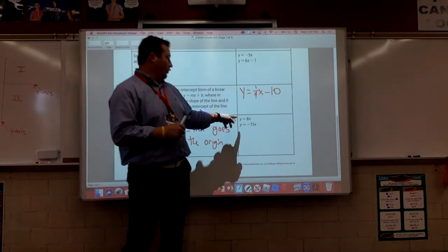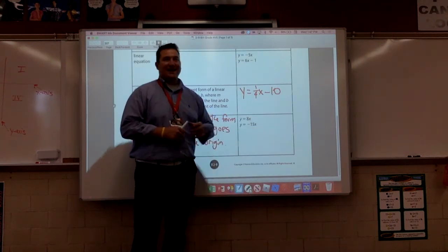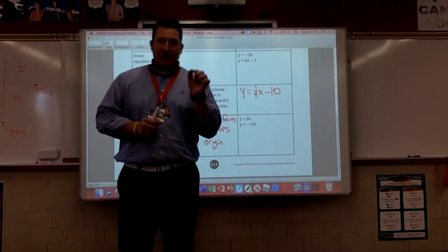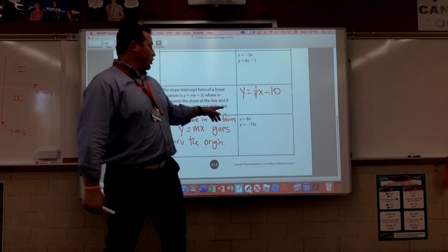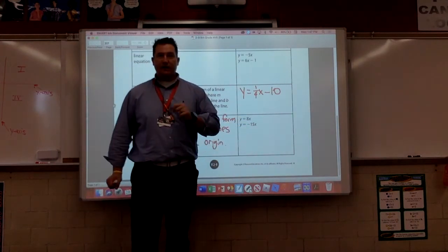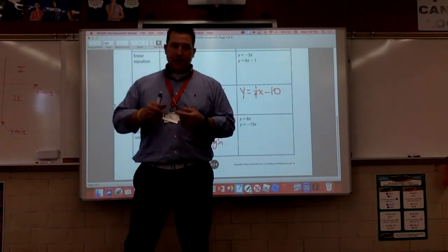They give us a few examples. Over here, y equals 8x and y equals negative 15x. Again, we've got to be able to recognize the slope, 8 and negative 15, from those equations.